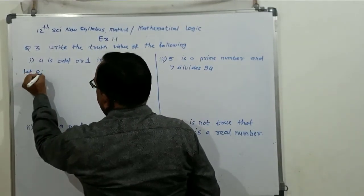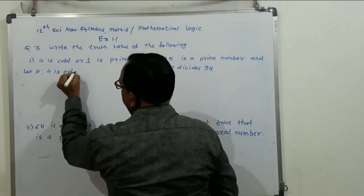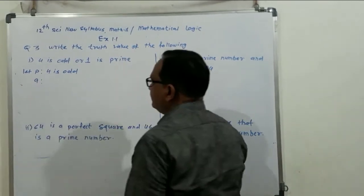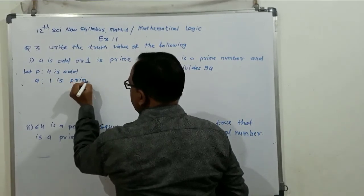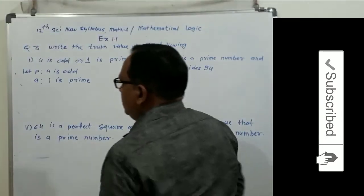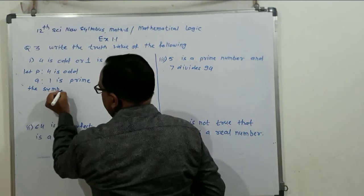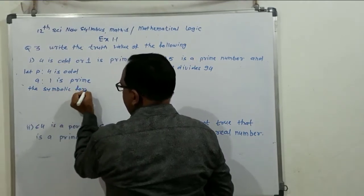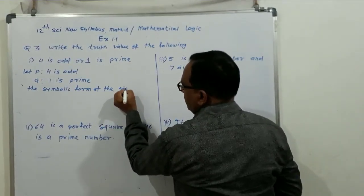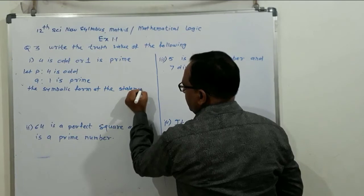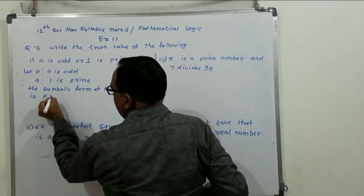Let P: 4 is odd, and Q: 1 is prime. The symbolic form of the statement is P or Q.